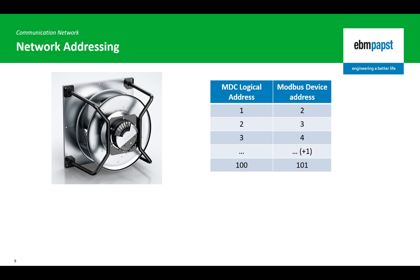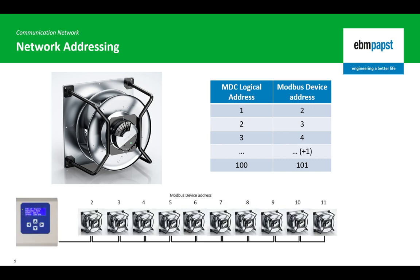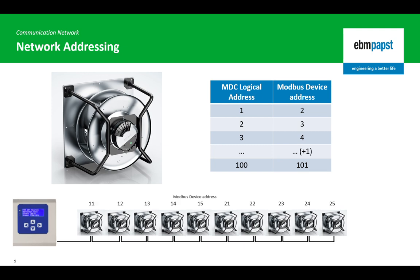The MDC does not accept gaps in the addresses of the fans. For example, a 10-fan array with device addresses between 2 and 11 is acceptable. A 10-fan array with device addresses 11 to 15 and 21 to 25 is not acceptable.